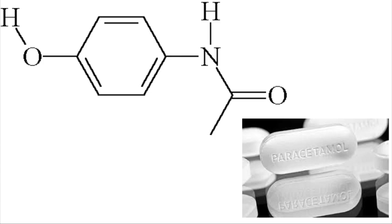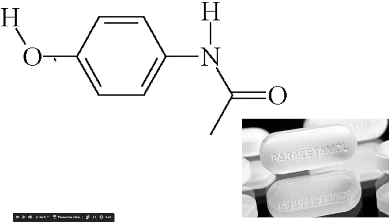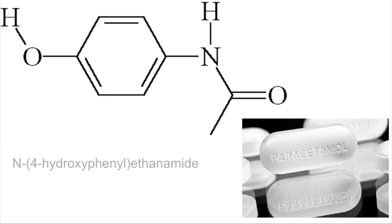This molecule is found in paracetamol. We've got a hydrogen and a carbon group on the N, so this is a secondary amide. Two carbons means ethanoic acid, therefore ethanamide. On the N we've got a phenyl group with an OH group on carbon four, so this is N-(4-hydroxyphenyl) ethanamide.